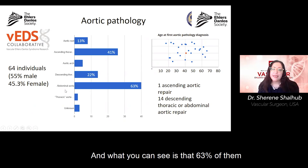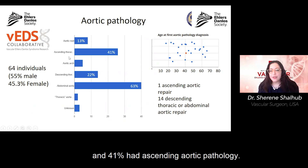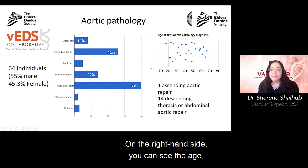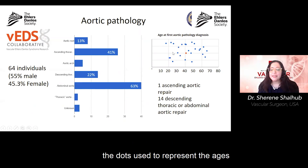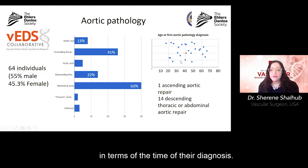63% of them had abdominal aortic pathology and 41% had ascending aortic pathology. On the right-hand side you can see the ages — the dots represent when patients were first diagnosed, and there is a broad spread between ages 20 and 70.